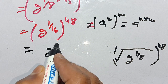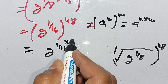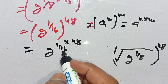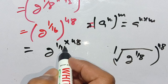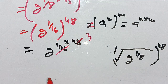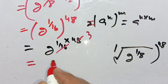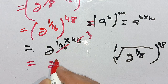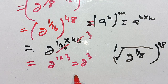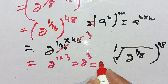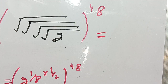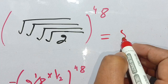When we multiply the powers, it becomes 2 to the power 1 divided by 16 times 48. Since 16 times 3 equals 48, this simplifies to 2 to the power 1 times 3, which equals 2 to the power 3, and 2 to the power 3 equals 8. Thus our final solution of this radical problem is equal to 8.